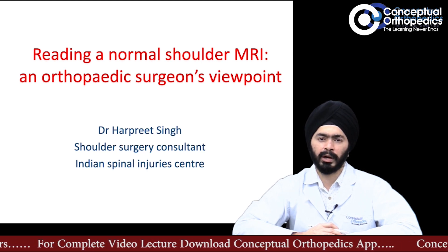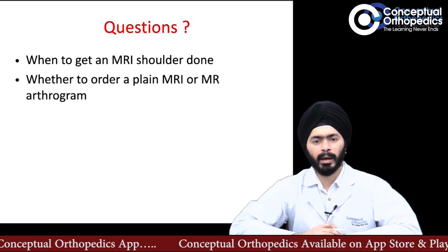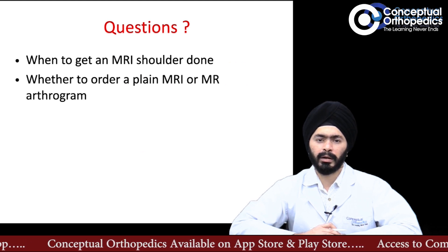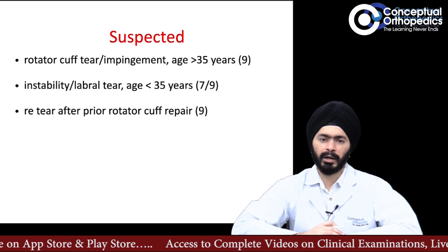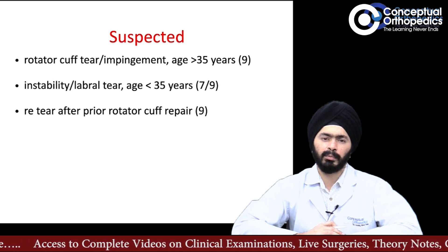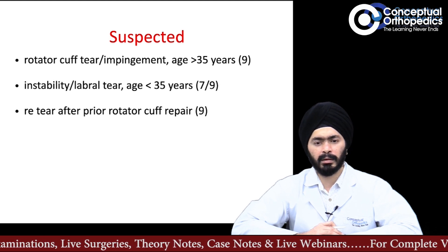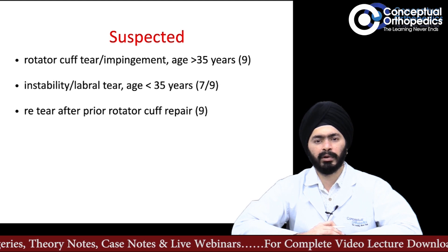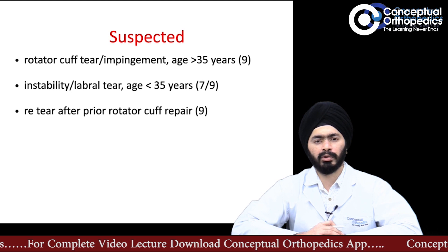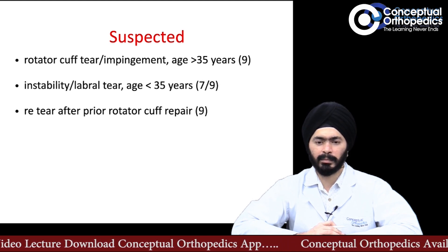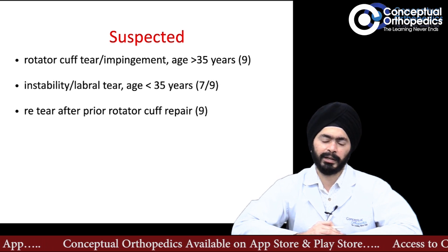I'll be talking about shoulder MRI — how to read a shoulder MRI. The first question is when to order a shoulder MRI, and whether to order a plain shoulder MRI or a shoulder MR arthrogram. As orthopedic surgeons, we order a shoulder MRI for the following conditions: the most important indication is a rotator cuff tear when suspecting a cuff tear or impingement; for instability lesions when thinking of a labral tear or pathology; or when a rotator cuff has been repaired and re-tear is suspected. The numbers in brackets on this slide are the level of indication by the American College of Radiology, with nine being the highest and one being the lowest.